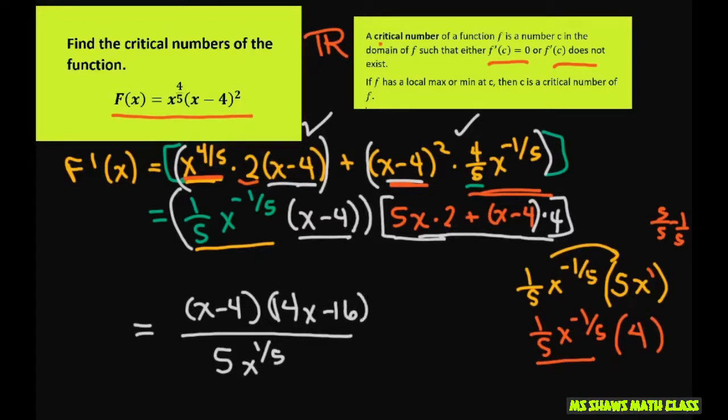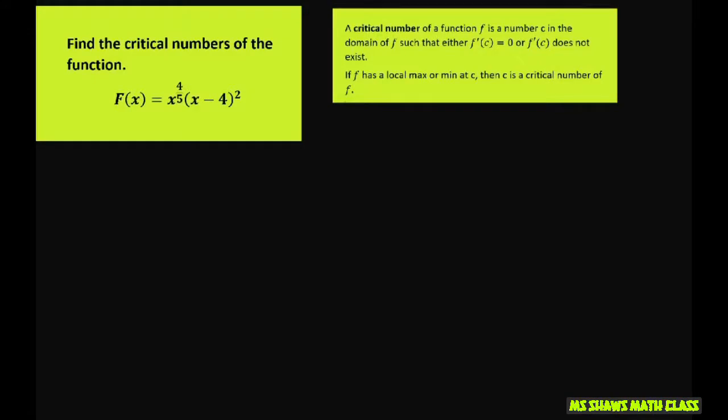This is going to be 10x for this piece and then plus 4x minus 16. So that's the numerator part. Now let's continue on. So if you simplify that, let me write down what I had. So I had x minus four times 14x minus 16, divided by 5x to the one-fifth.